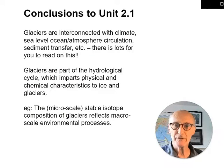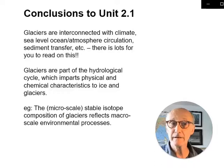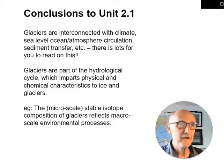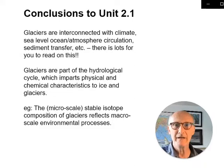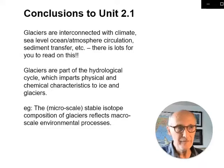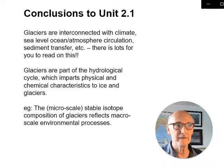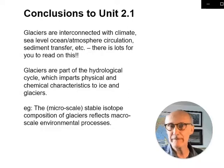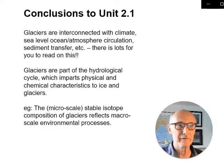This is just a short introduction setting you up to go and look at the other mini videos that will explore these issues in more detail. The conclusion I'm hoping you'll arrive at is that glaciers are interconnected with other parts of the system — climate, sea level, atmospheric circulation. Central to all of that is glaciers being part of the hydrological cycle, which imparts physical and chemical characteristics to the ice. When we look shortly at how ice is formed and how glaciers grow, shrink, and move, you will see that this is very closely tied to things happening in the hydrological cycle.